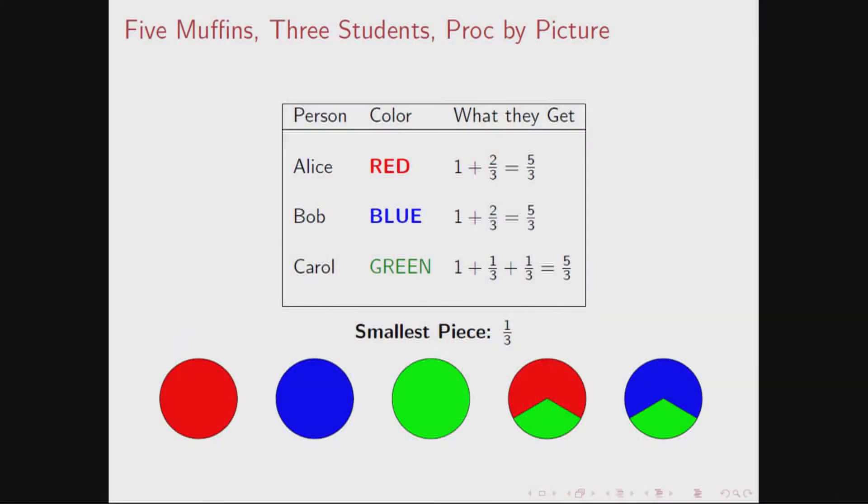So one way to do it is to give Alice—is to cut the muffin. Oh yeah, okay, I can't point to anything. It's over there. Yeah, it's to cut the first two muffins not at all, the first three don't cut, the next two cut one-third, two-thirds, and give Alice, you can see, one and two-thirds, give Bob, oh Bob Hearn, there you are, one and two-thirds, and give Carol one and one-third and one-third, and that'll do it. The smallest piece is one-third.